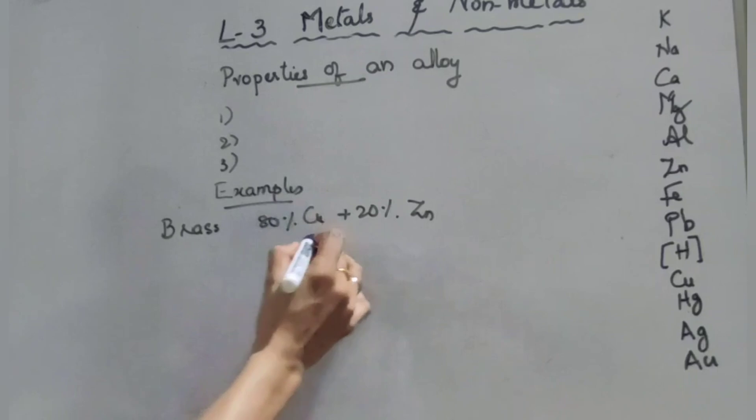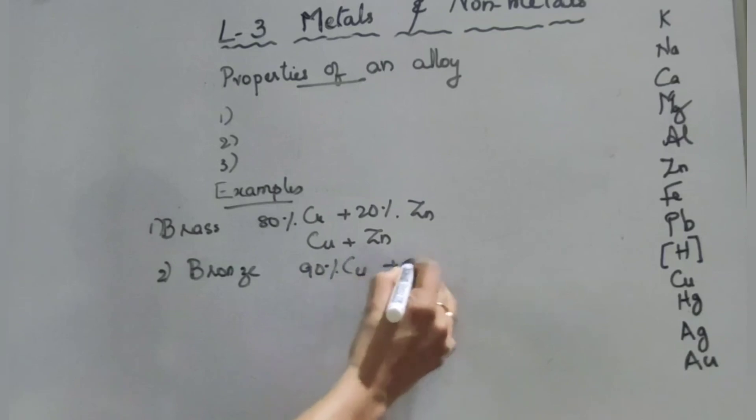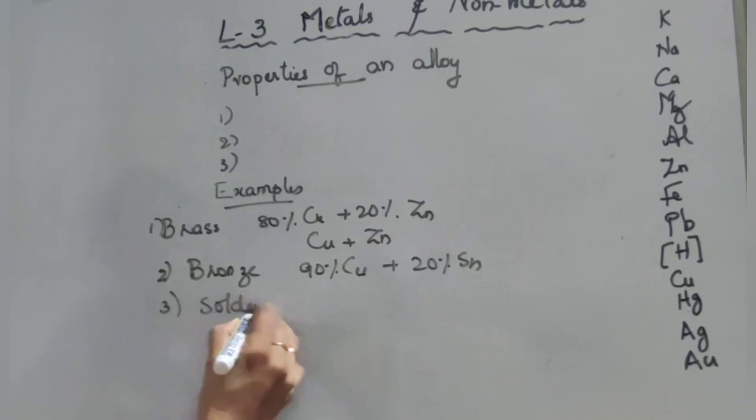Second, bronze. Here also, alloy of 90% copper and 10% tin. That is alloy of copper and tin. Third one: solder. Here it is 50% lead and 50% tin.